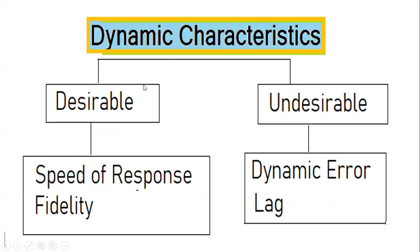Dynamic characteristics include both desirable and undesirable ones. The desirable characteristics are: speed of response should be high, and fidelity — which is the faithfulness of the reproducing capability of the output signal with the change in the input signal — should also be high. The undesirable characteristics are: dynamic error should be low, and lag should be low.